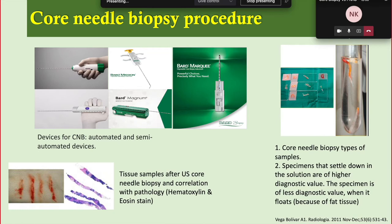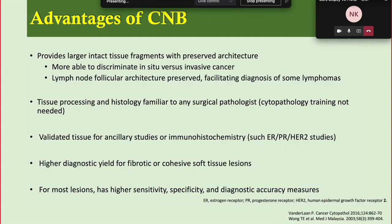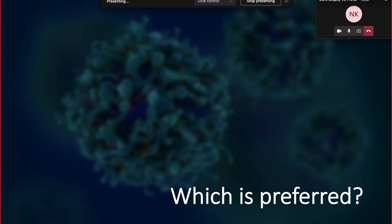Advantages of core needle biopsy include better ability to discriminate in situ versus invasive cancer. Lymph node follicular architecture is preserved, facilitating diagnosis of lymphomas. Tissue processing and histology are similar to surgical pathology. It provides validated tissue for ancillary studies such as ER, PR, HER2/neu immunohistochemistry, and gives higher diagnostic yield for fibrotic and cohesive soft tissue lesions. For most lesions, core biopsy has higher sensitivity, specificity, and diagnostic accuracy compared to FNAC.